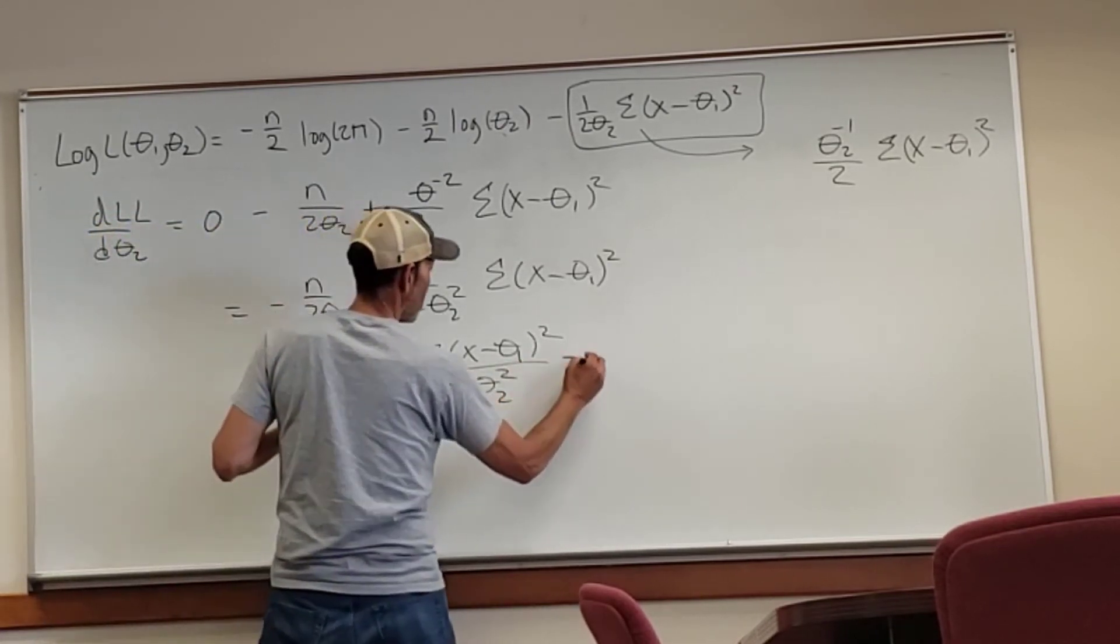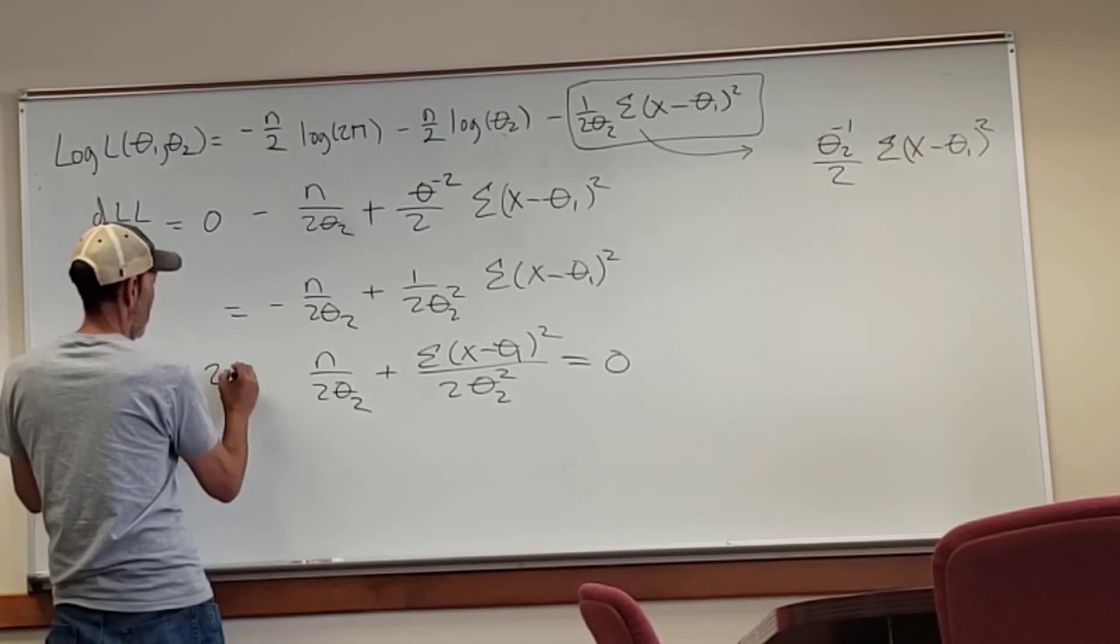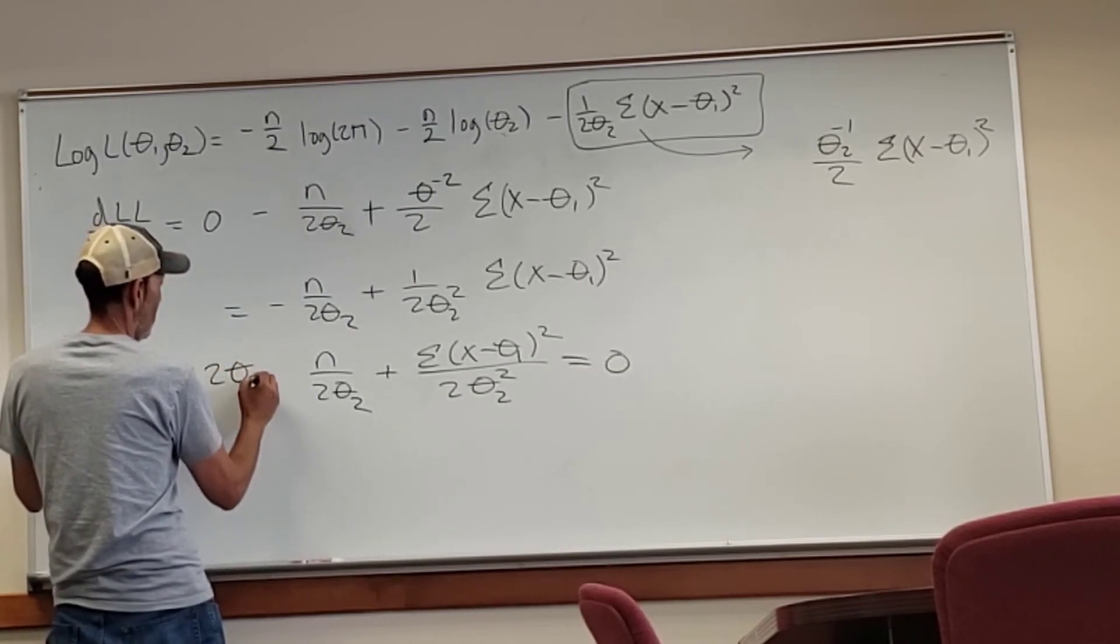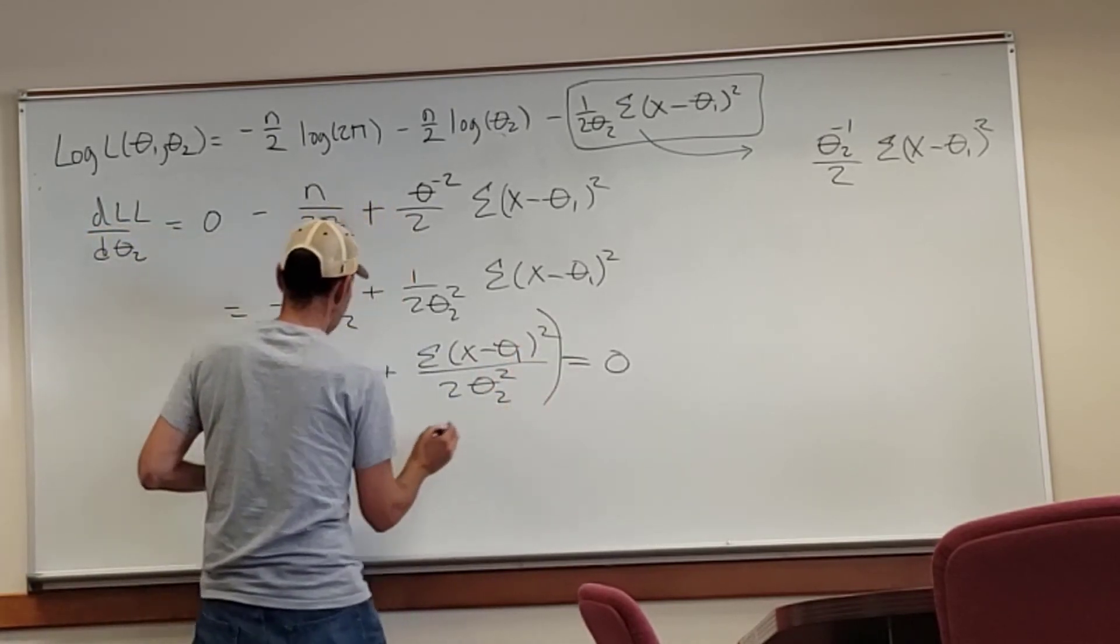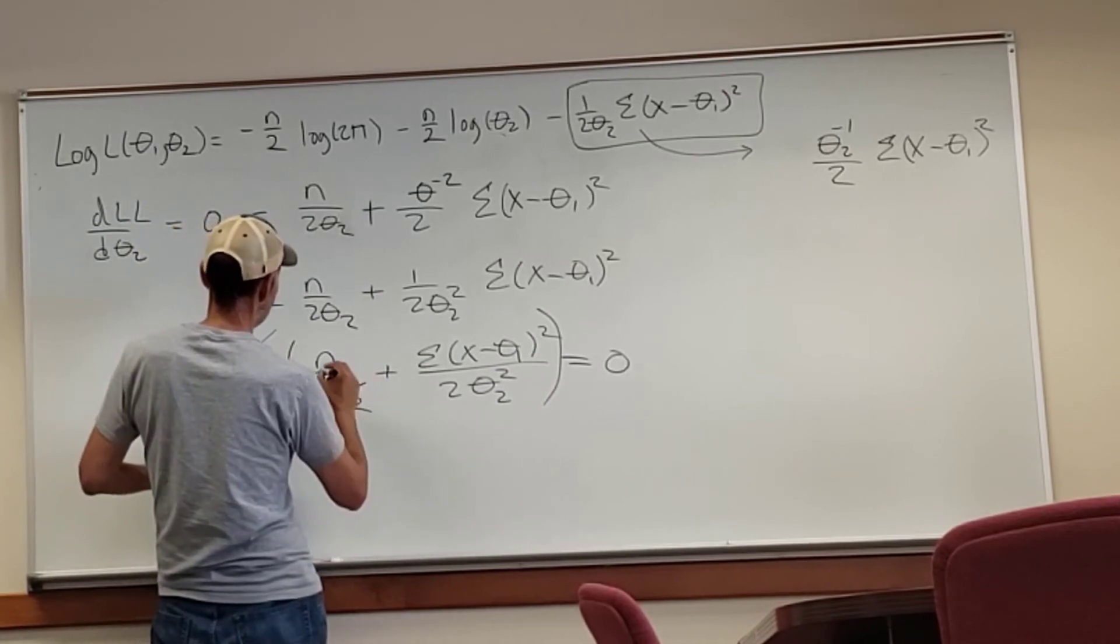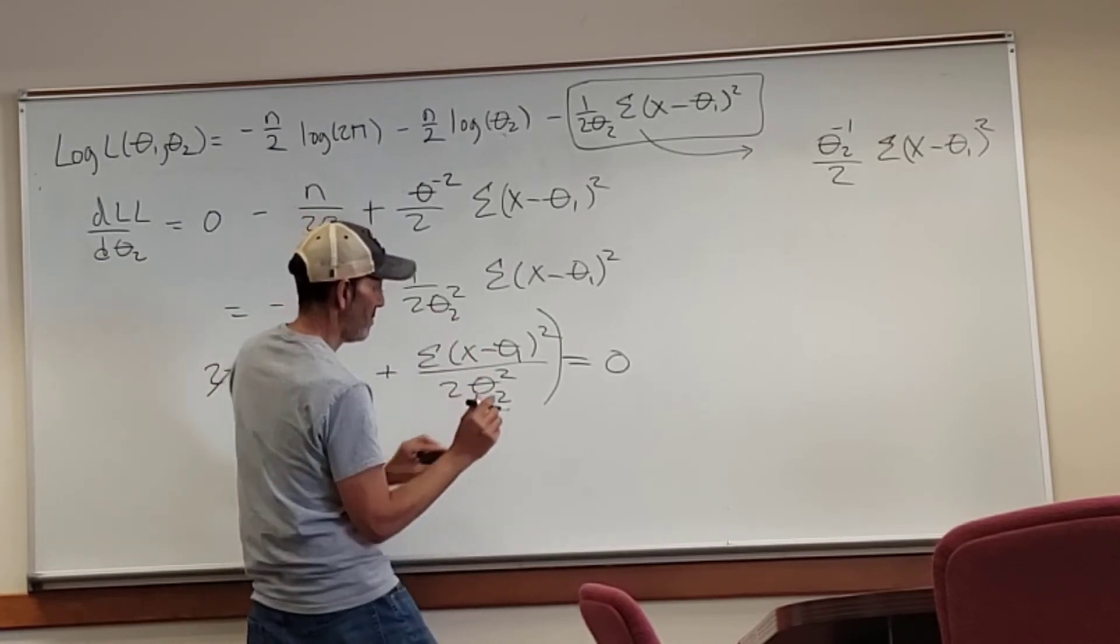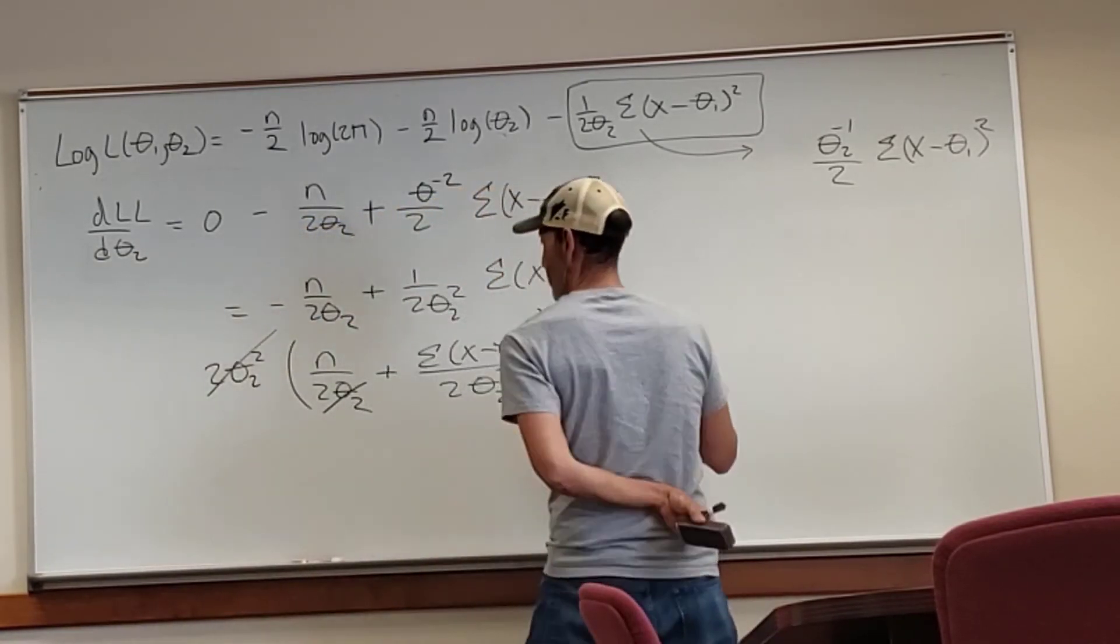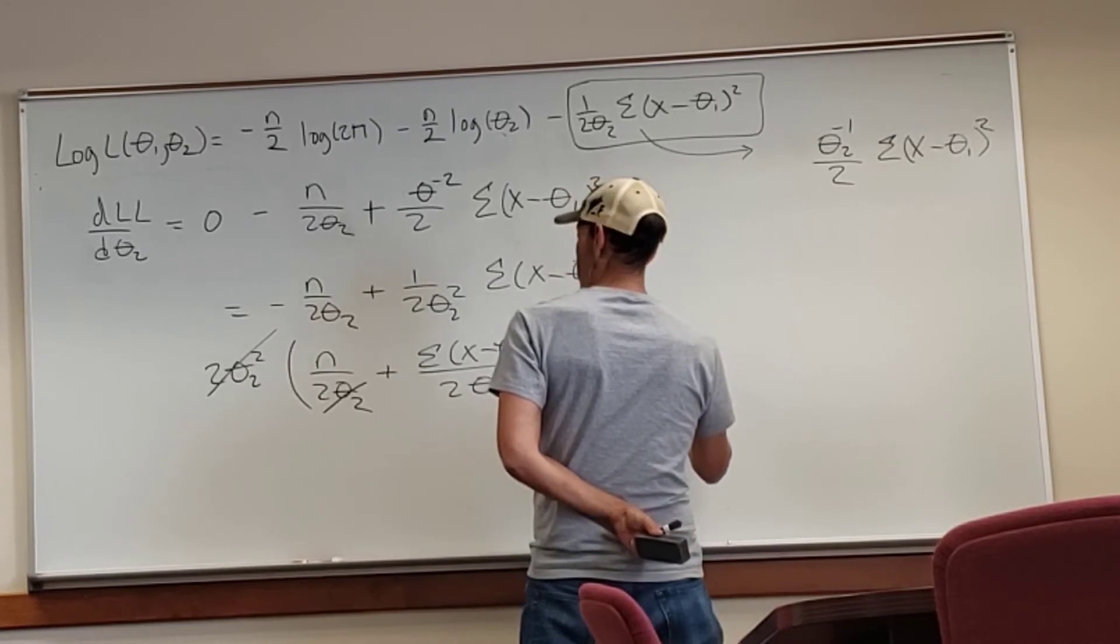What if I multiply this by two theta two squared? So we'd cancel that out. We wouldn't cancel that totally, because you'd have a theta two in the numerator, but this part would cancel out for sure. Let's hold off on the zero.